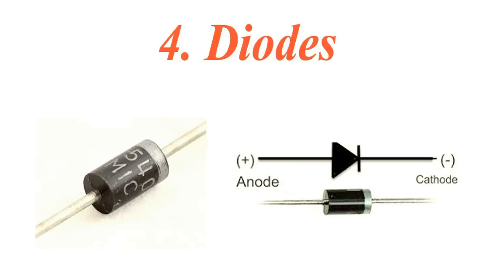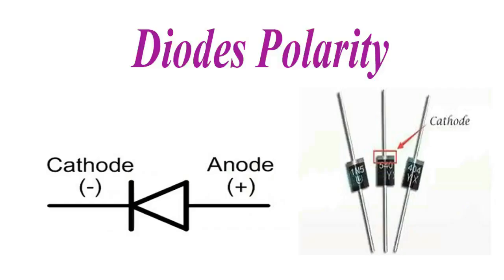Diodes. A diode allows current to flow in only one direction, like a one-way valve. You can identify a diode's polarity by looking for a band or strip on the body. The white strip on the diode's body indicates the cathode or negative terminal.